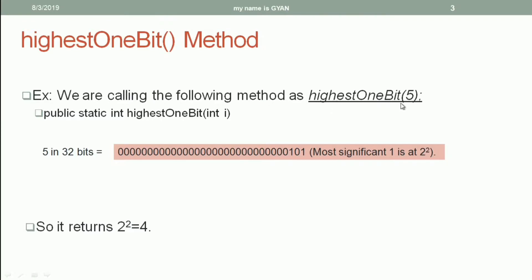Let's call the highestOneBit() method of the class integer using the argument 5. The 32-bit representation of the value 5 is shown here, and the most significant 1 in this 32-bit representation is at position 2. The value corresponding to this most significant bit is 2 to the power 2, which equals 4. So the weight corresponding to the most significant bit is 4, and that's why highestOneBit(5) returns 4.